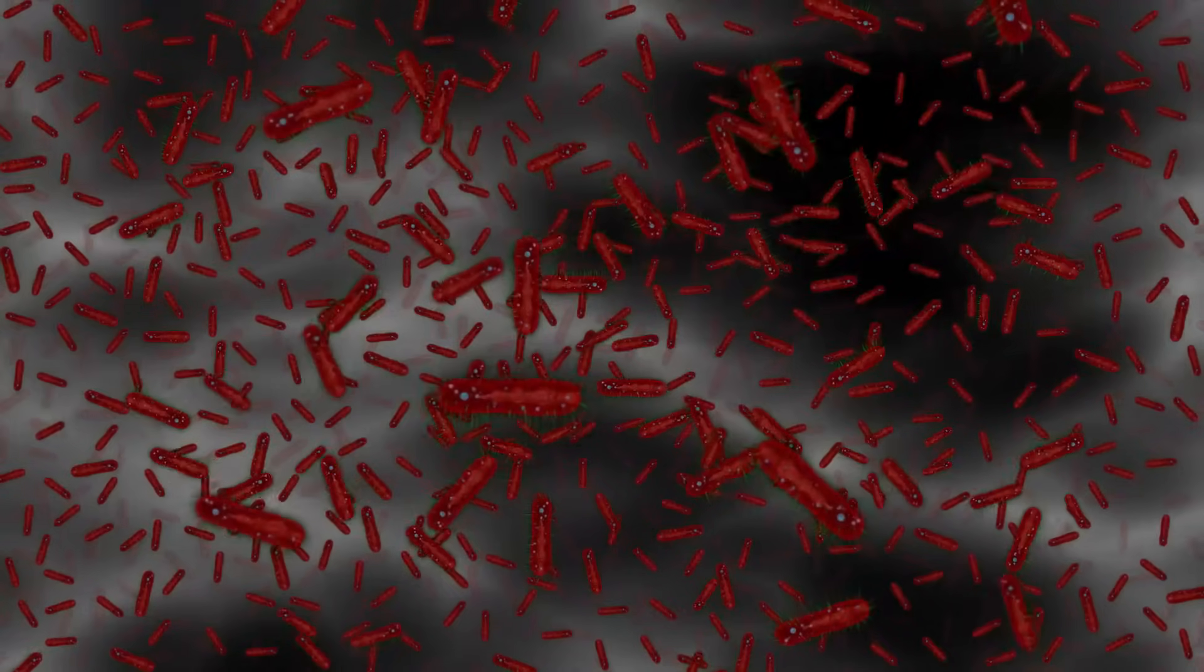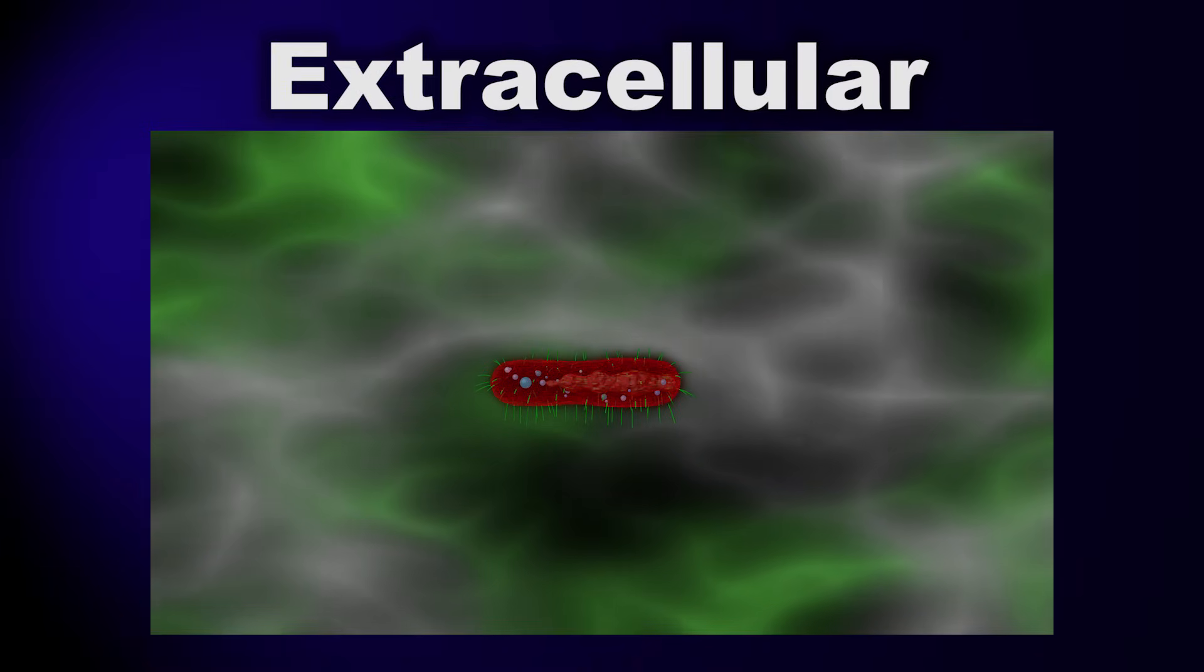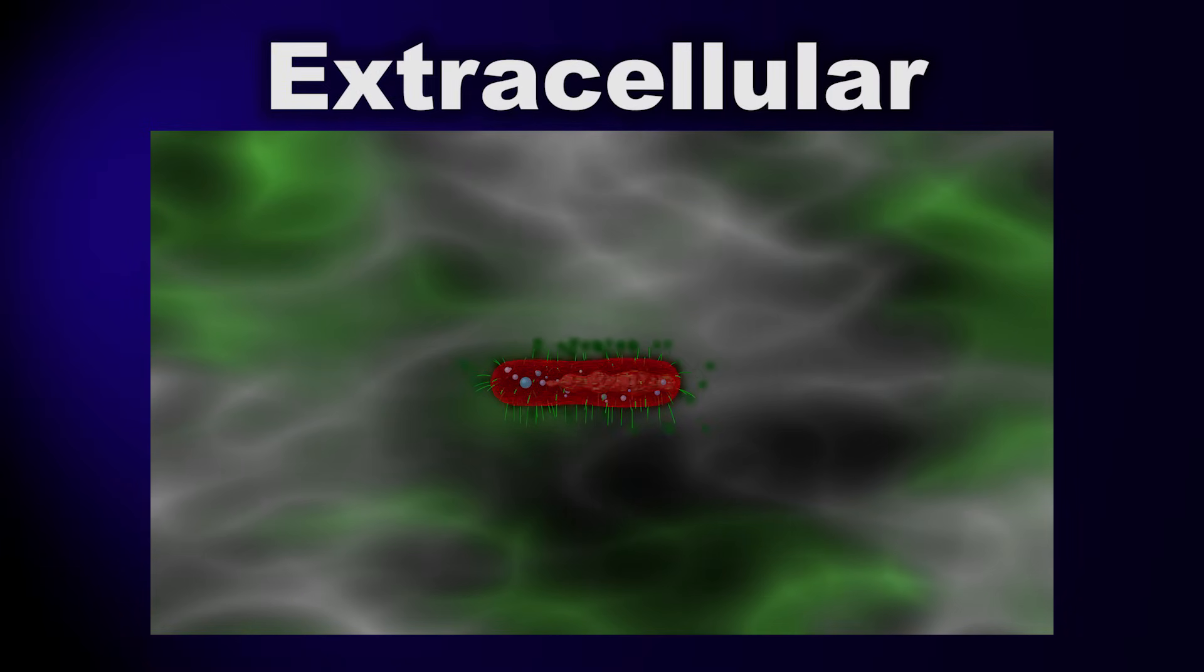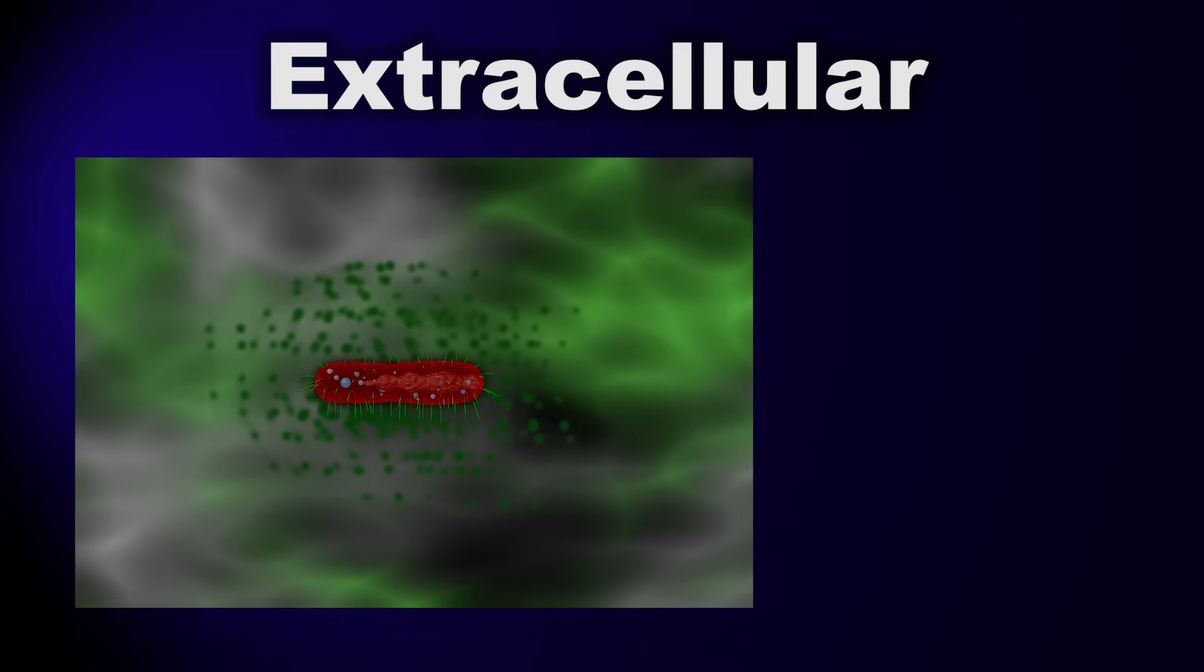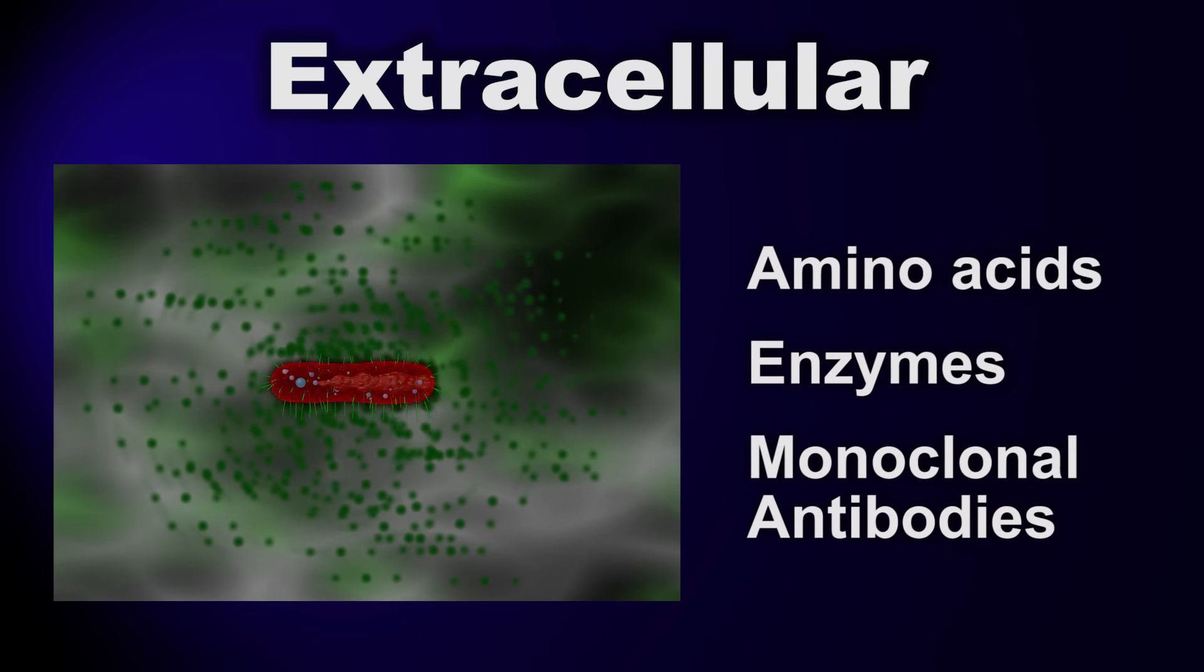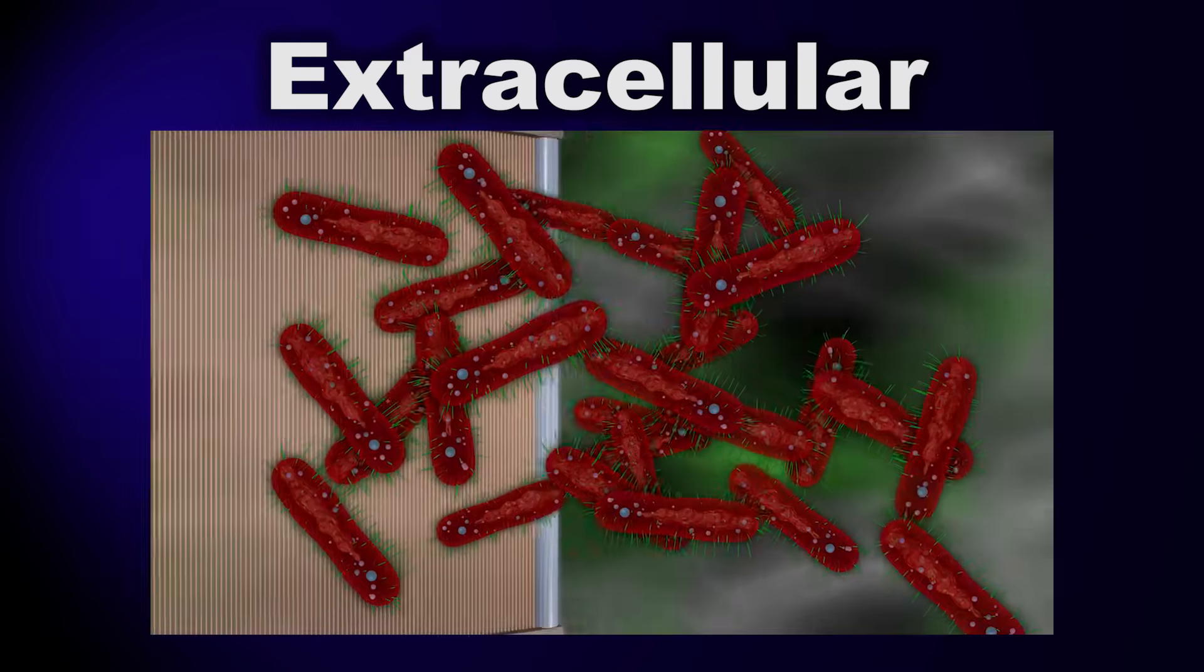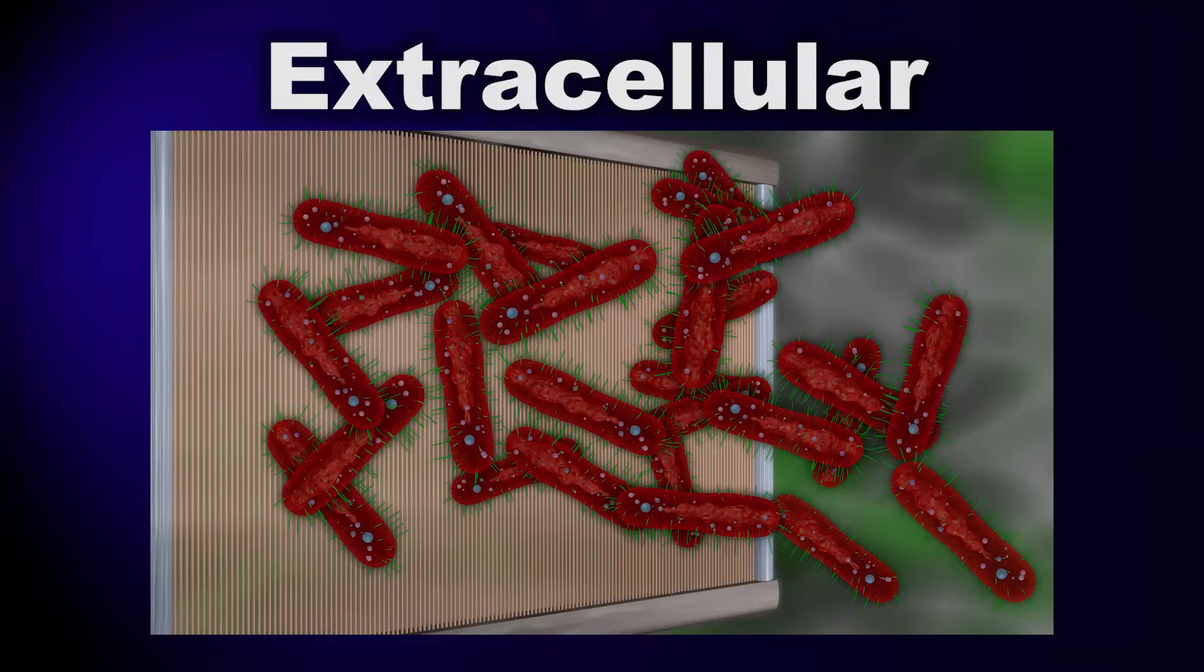In fermentation, there are two ways in which the product of interest is produced by the cells. Extracellular production is when the cell secretes the product of interest. Examples of this could be certain amino acids, enzymes, or monoclonal antibodies. In the case of extracellular production, the biomass or cells are discarded at the beginning of separation and the medium is kept for further processing.